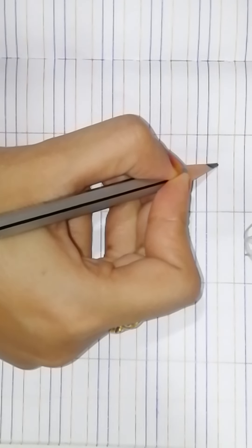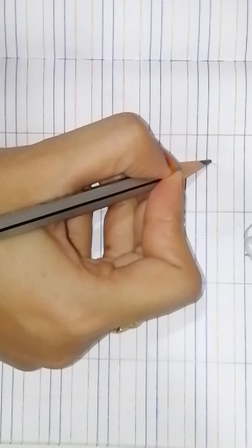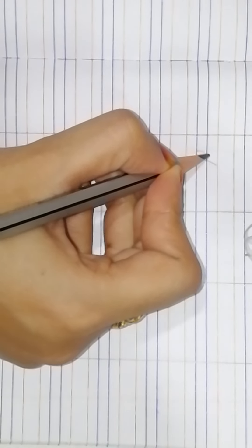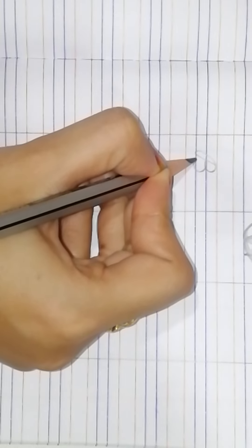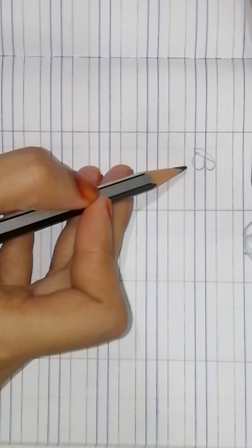We are going to start from the top. Red line se neechayeghe slant. Vapis upar jayeghe hai. One circle, another big circle. This is MAMA B. Capital, cursive letter B.